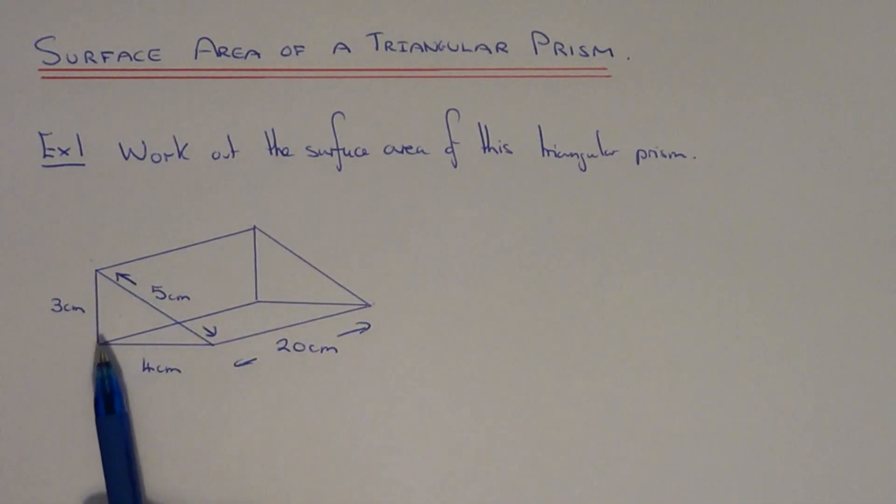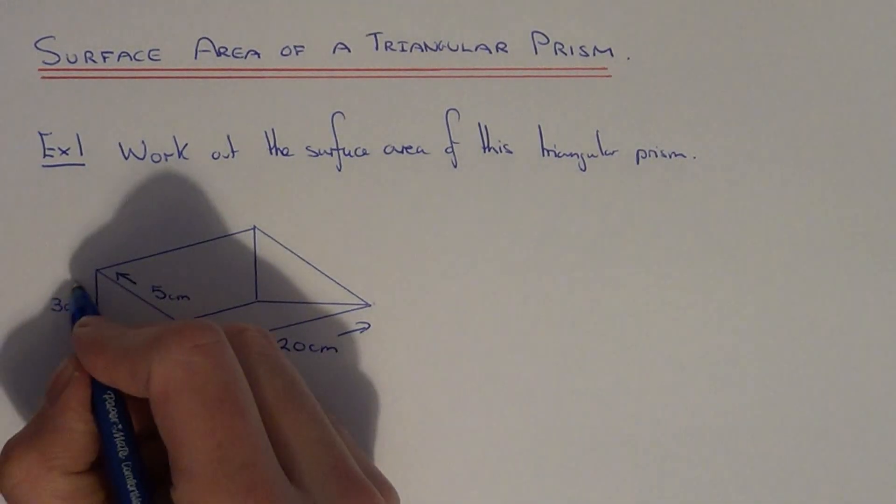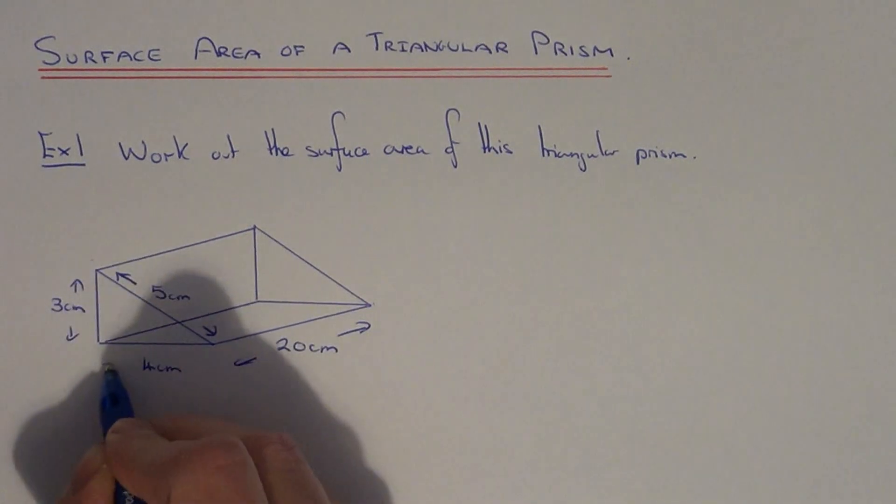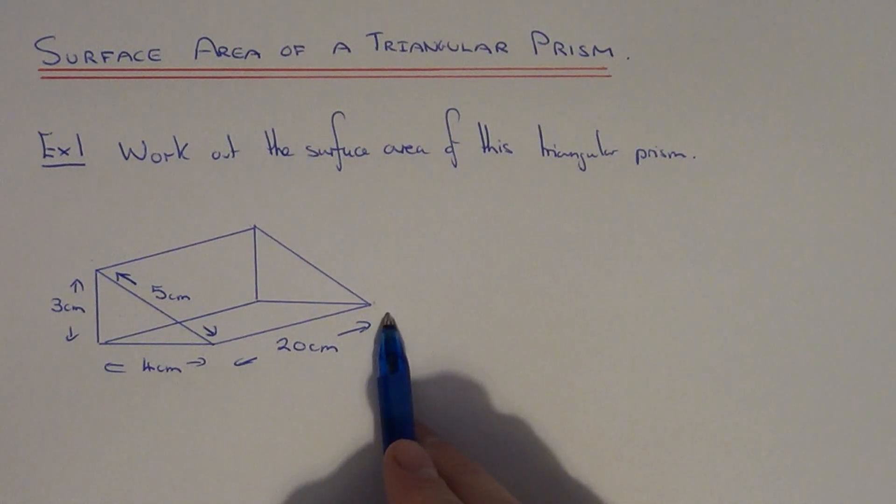So let's do example one. We've got to work out the surface area of the triangular prism. We've got a height of 3, a base of 4, a sloping length of 5, and a length of the whole prism which is 20.